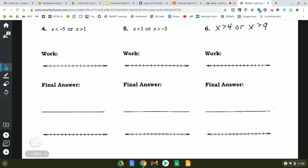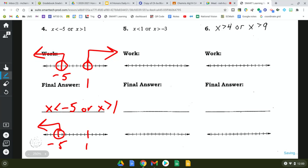And the first one says x is less than negative 5 or greater than 1. So on my work graph, I put negative 5 and 1, less than negative 5, greater than 1. And my final answer is exactly the same. I have to include the word or. And I don't have to overlap with an or inequality.